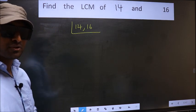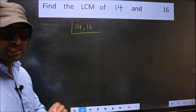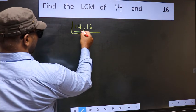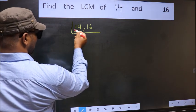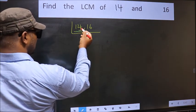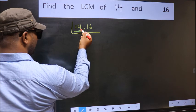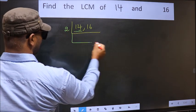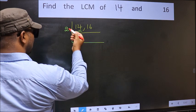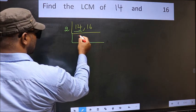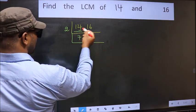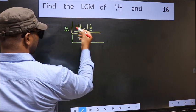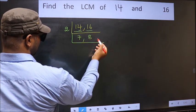Now you should focus on the first number which is 14 here. For this number, last digit 4, so take 2. Now when do we get 14 in the 2 table? 2 sevens are 14. The other number 16 — when do we get 16 in the 2 table? 2 eights are 16.